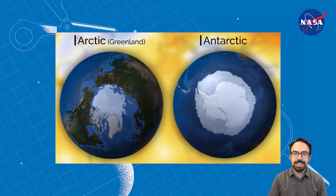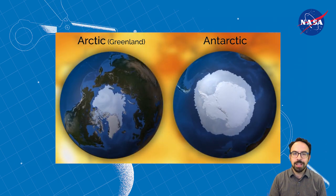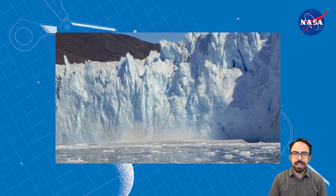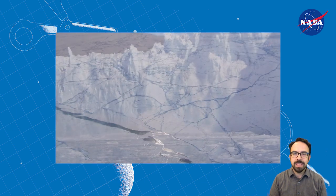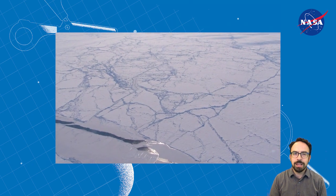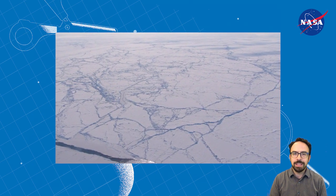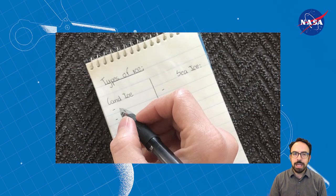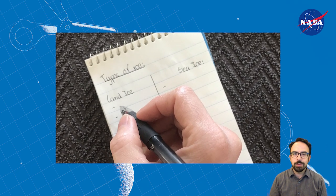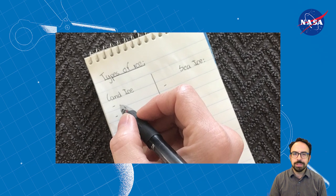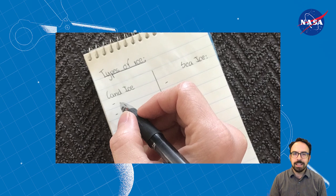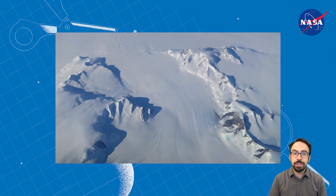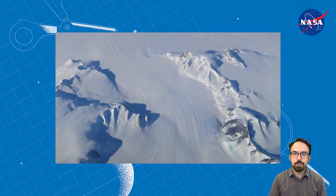Maybe you've heard that melting ice adds to sea level rise, but did you know that it makes a difference where that ice is? Take a moment to think about the types of ice that can be found in nature. Make a list on paper or in your head, then sort it into two groups: ice that's found on land and ice that's found at sea.